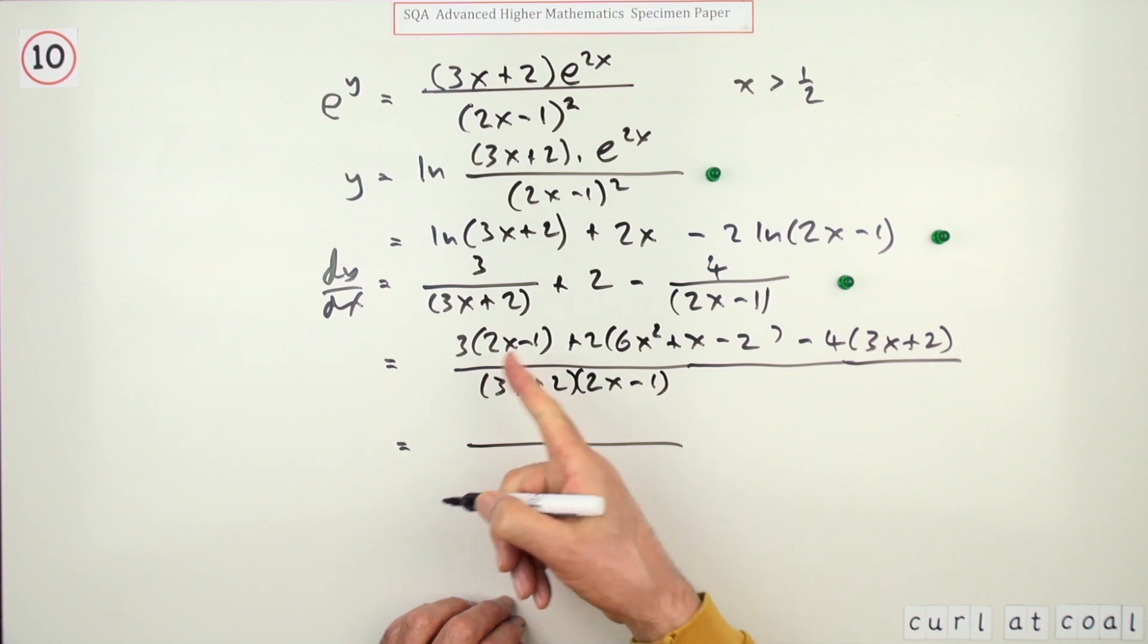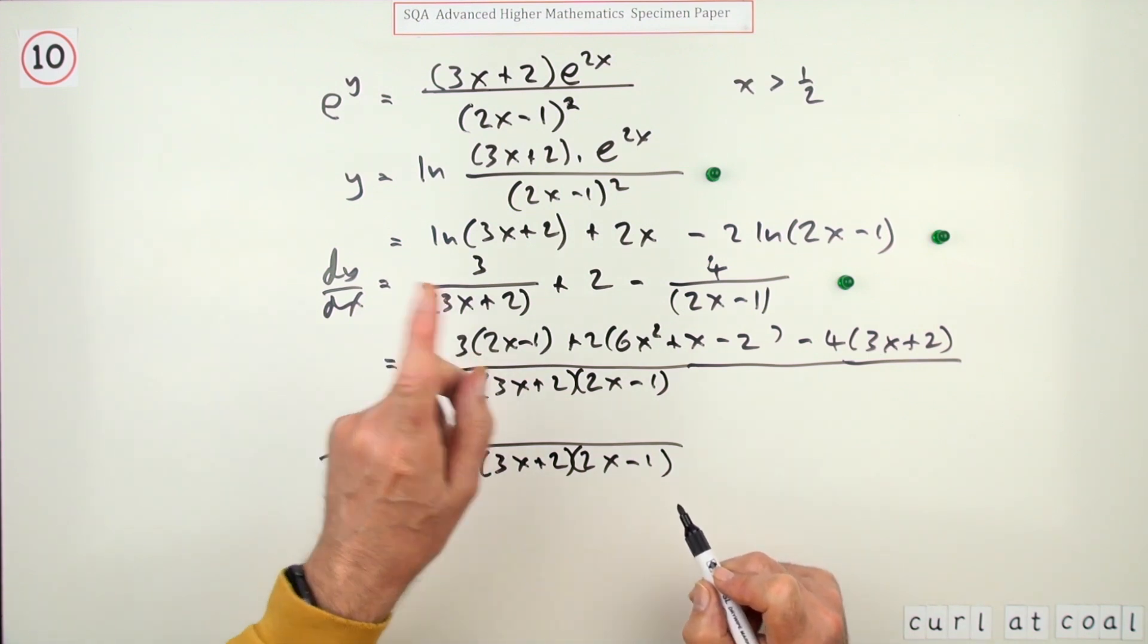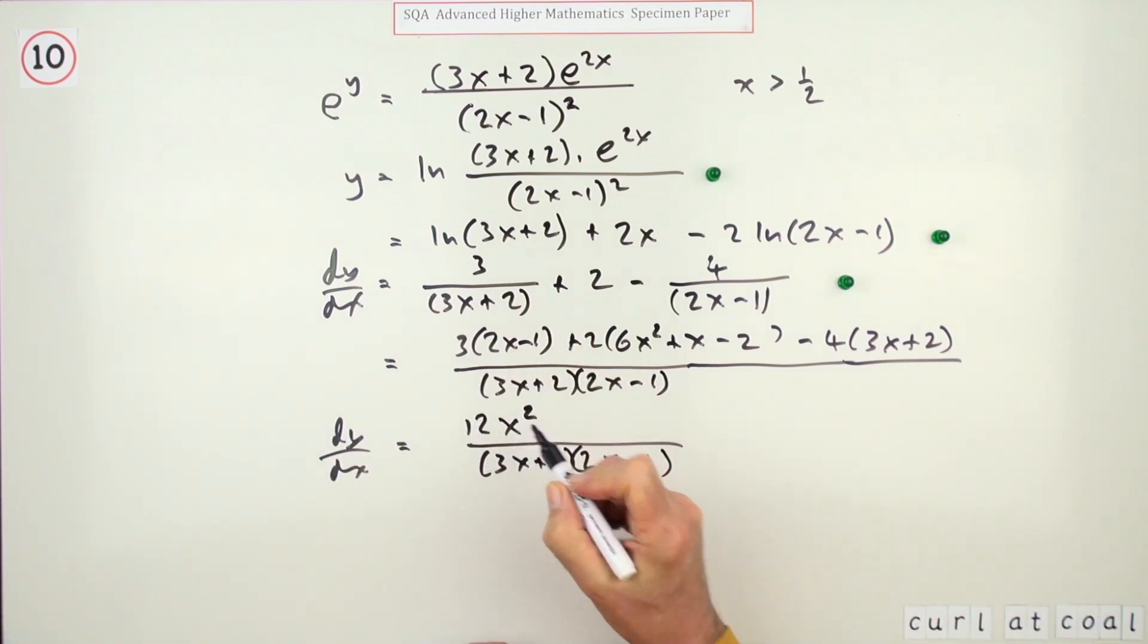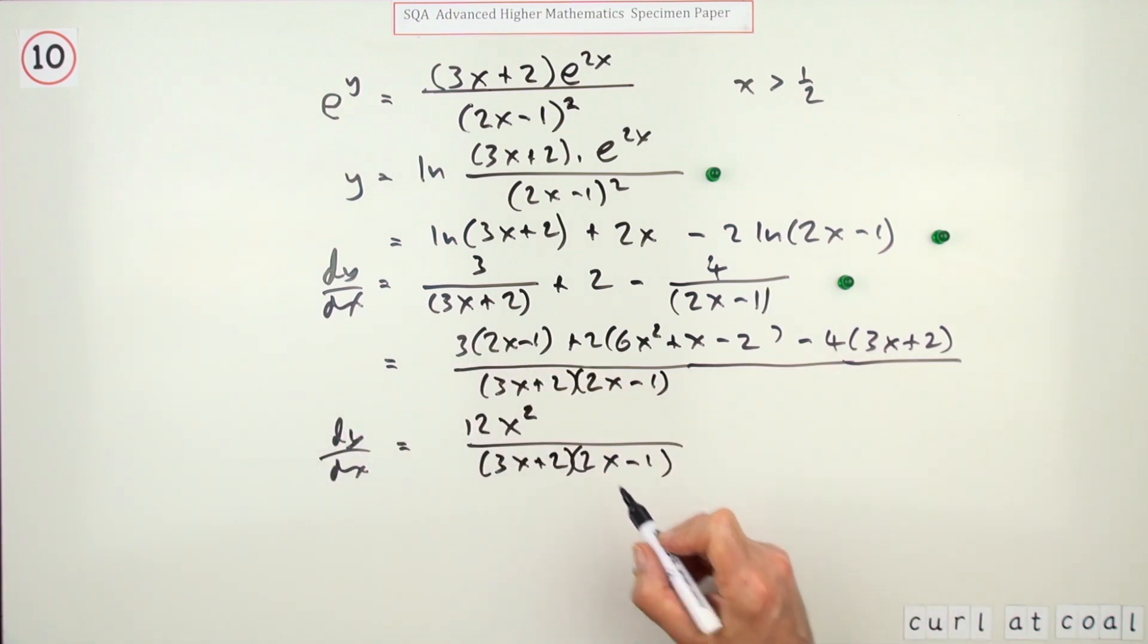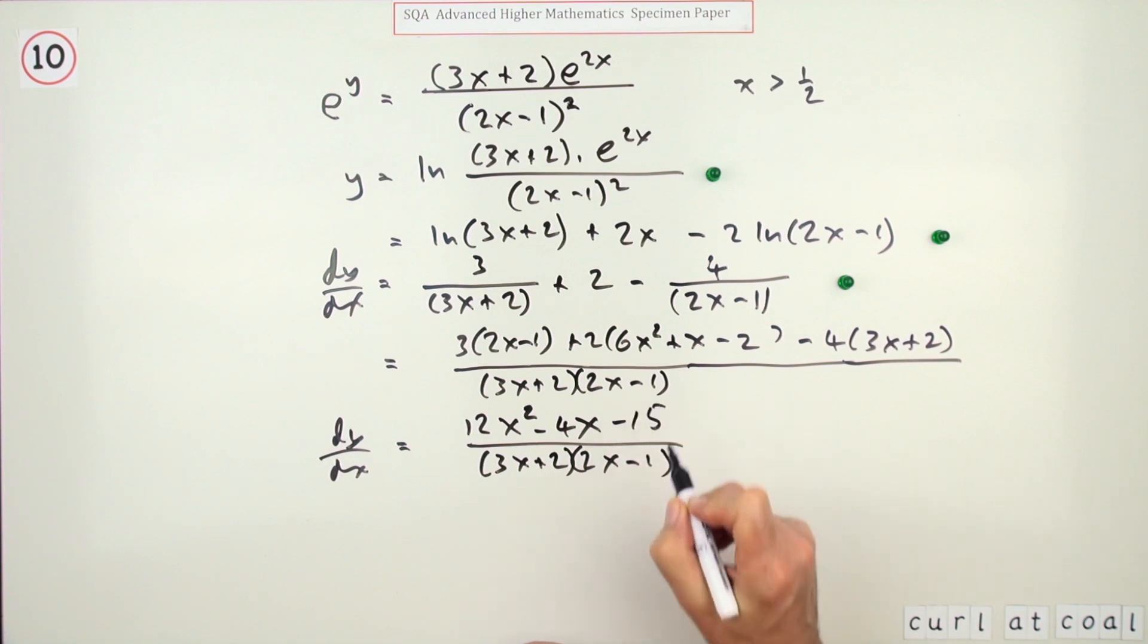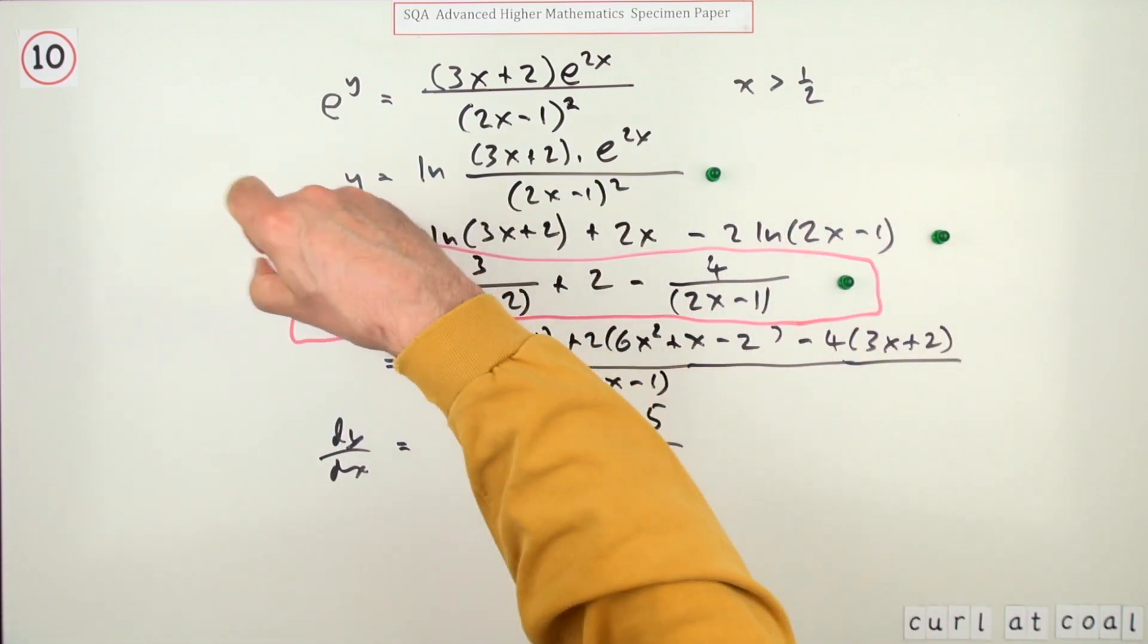But I can just do it in one go just by picking out the terms I want. So the denominator was 3x plus 2, 2x minus 1 and this will finally be dy by dx. And then looking for the x squared terms, I've got what was one here, 12 and that's all. Then the x terms, I've got 6 and another 2 makes 8, but take away 12 is minus 4x. And the number part, I've got minus 3 and minus 4 is minus 7 and minus 8 is minus 15. So there's the answer for no marks. Because according to the marking scheme, the marks stopped here. But I would have said it should have gone to there.